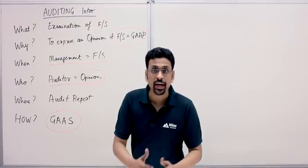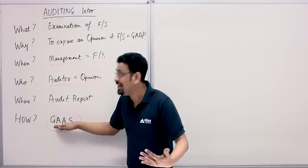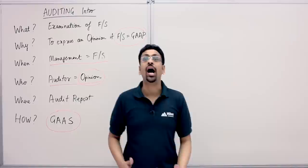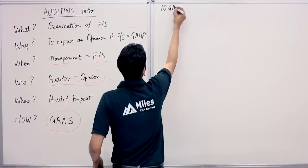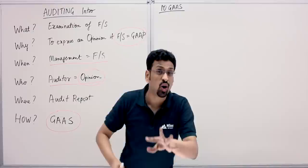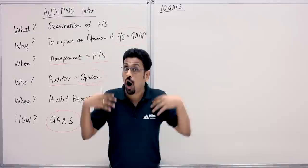An audit is done by performing audit procedures as per GAAS — Generally Accepted Auditing Standards. GAAS is the base on which our entire auditing spectrum is based. There are 10 auditing standards — 10 GAAS.